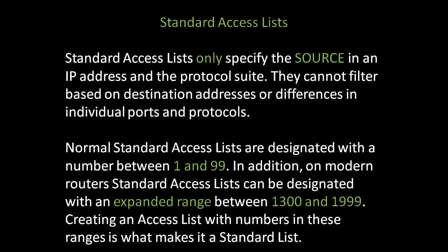Standard access lists only specify the source IP address in the protocol suite. They cannot filter based on destination addresses or differences in individual ports and protocols. Normal standard access lists are designated with a number between 1 and 99. In addition, on modern routers, standard access lists can be designated with an expanded range between 1,300 and 1,999. Creating an access list with numbers in these ranges is what makes it a standard list.